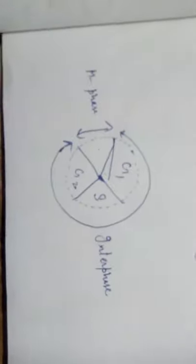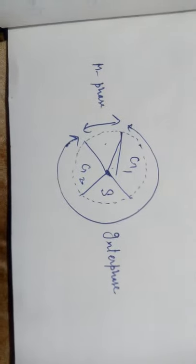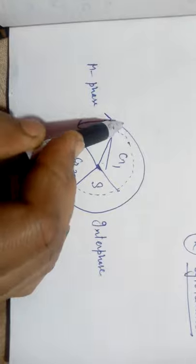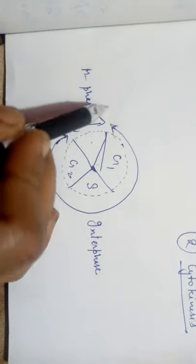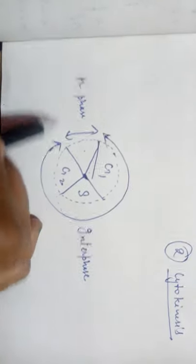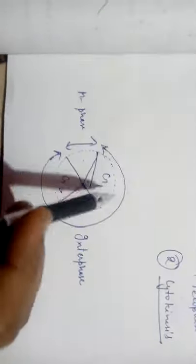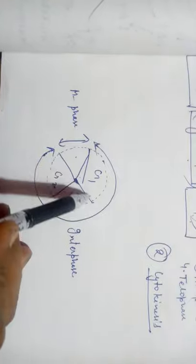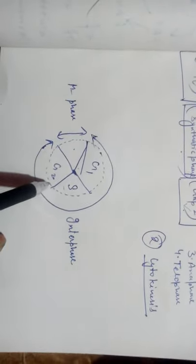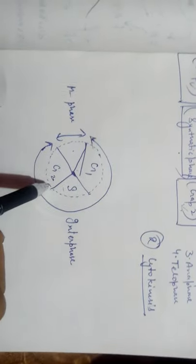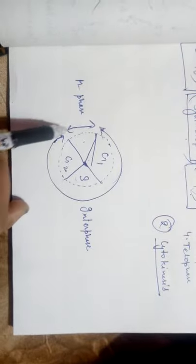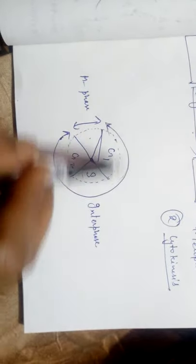This is the overview of the cell cycle. In the diagrammatic way, we can show this — the M phase occupies only a small time period, while the other phases are G1 phase, S phase, and G2 phase. This is the whole cycle which is carried out in the cell.